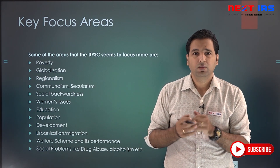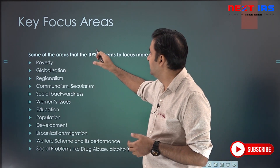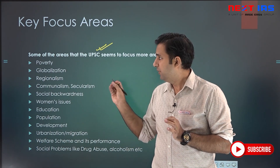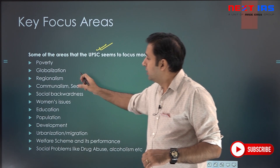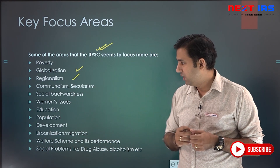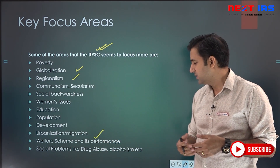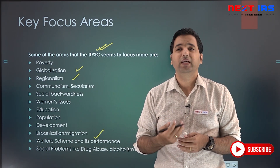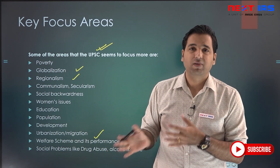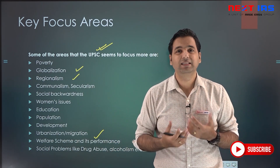For key focus areas, going through the topics reveals that UPSC is more prone to ask questions from certain areas. Poverty is one area where you will find questions every year in both Paper 1 and Paper 2. Similarly, globalization, regionalism, communalism, secularism, social backwardness, women's issues, education, population, development, urbanization or migration, welfare schemes and their performance, and social problems like drug abuse and alcoholism are frequently covered. These topics also appear verbatim in the essay paper.